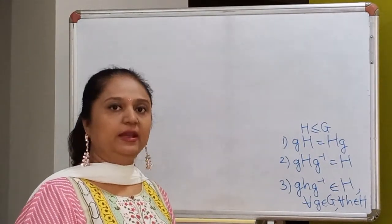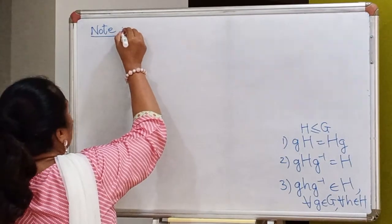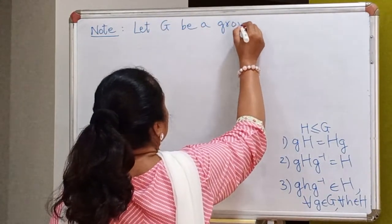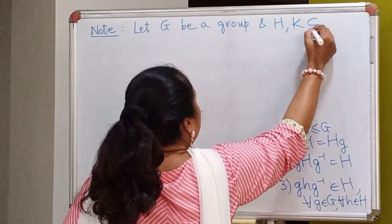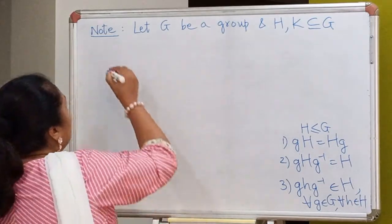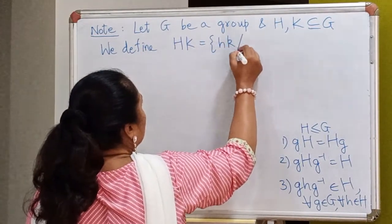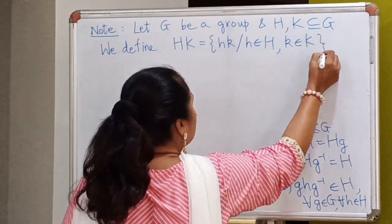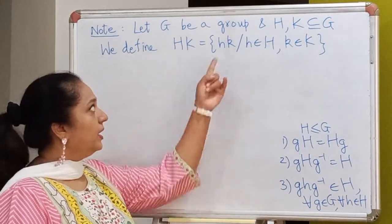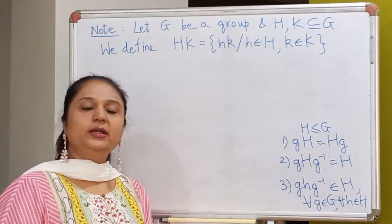Today, we will be deriving some more equivalent definitions of a normal subgroup. Before we begin, let me define a new set. Let G be a group, and suppose H and K are subsets of G. We define the set HK to be the collection of all products of the form hk, where h lies in H and k lies in K. So basically, every element in this set is a product of two elements, where the first element comes from H and the second from K.